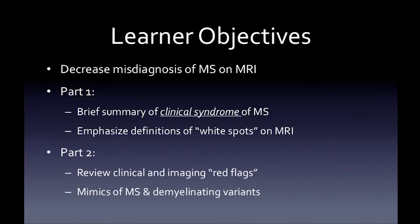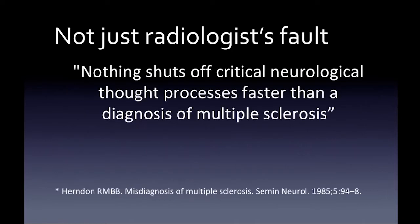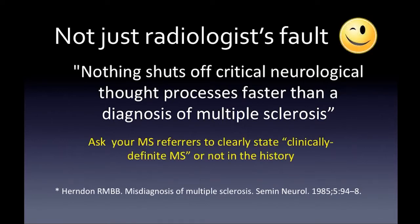MS is a clinical diagnosis, not an MRI diagnosis. In part two we're reviewing the clinical and imaging red flags you should watch out for. A useful quote: nothing shuts off critical neurological thought process faster than a diagnosis of multiple sclerosis. When reading these studies, look for or ask your referrers to clearly state 'clinically definite MS or not' in the history.